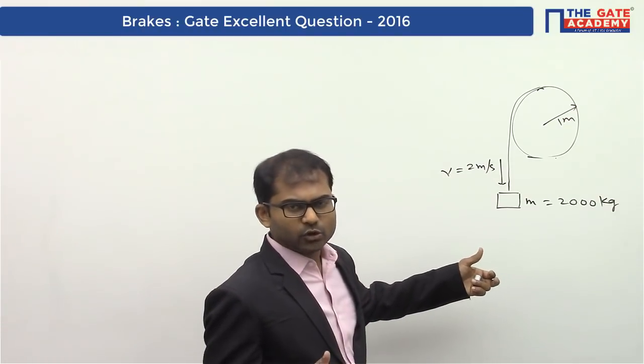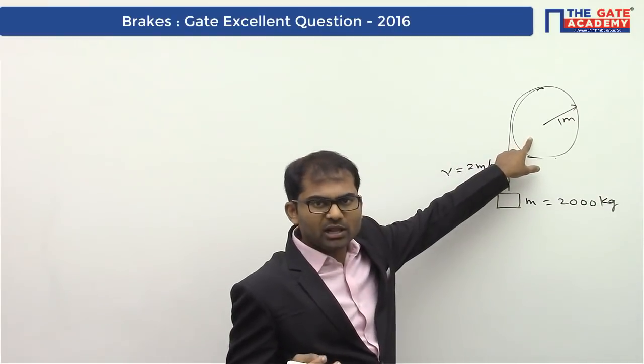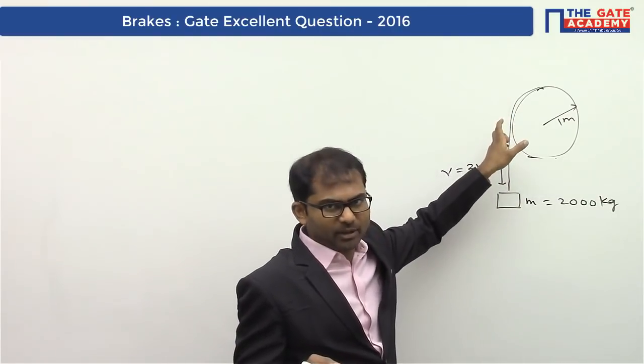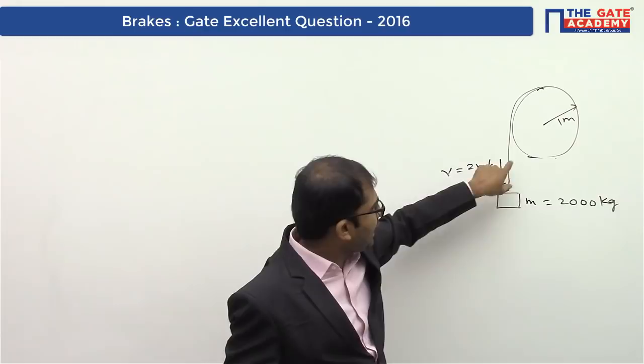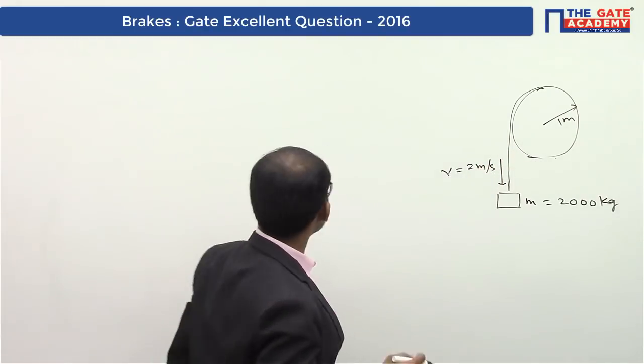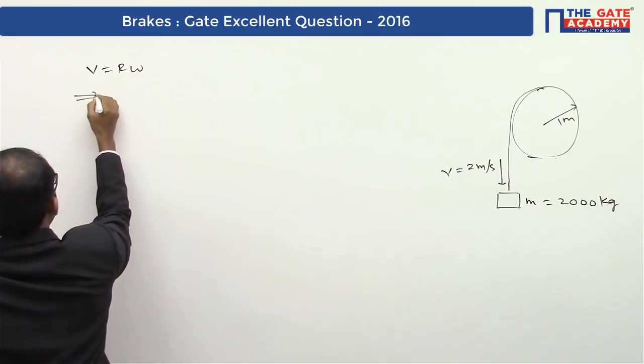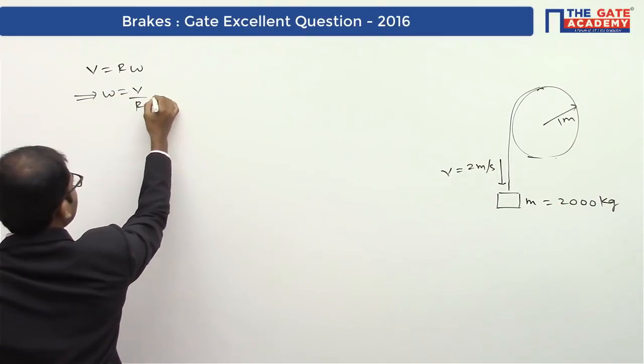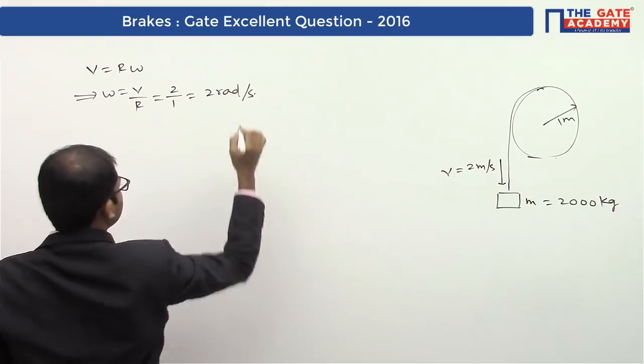As nothing is given about losses or rope slipping on the pulley, we can understand there is no slipping in the contact between rope and pulley. So we can say v = r·ω, which implies ω = v/r = 2/1 = 2 rad/s is the speed of rotation of the drum.